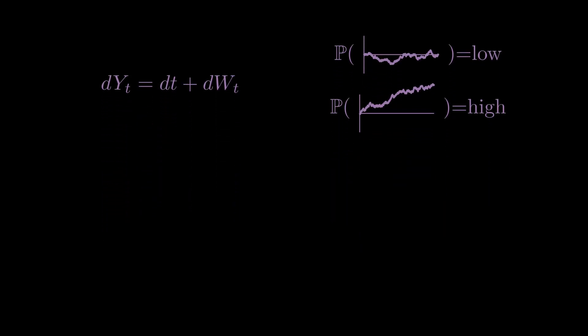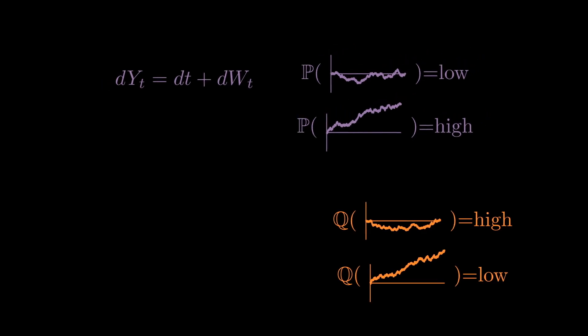Does there exist another probability measure such that the probability of looking flat is pretty high and the probability of going up is pretty low? The properties of a Brownian motion.